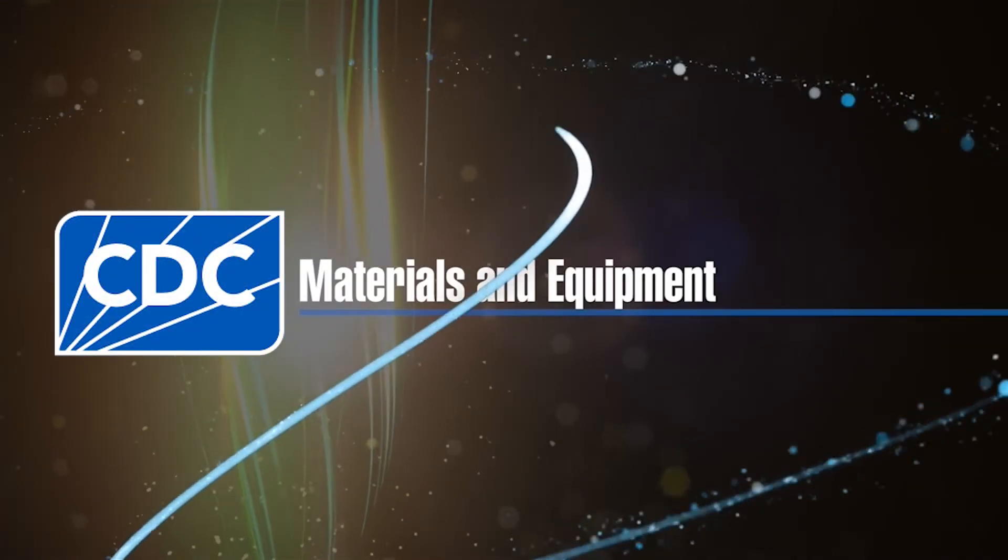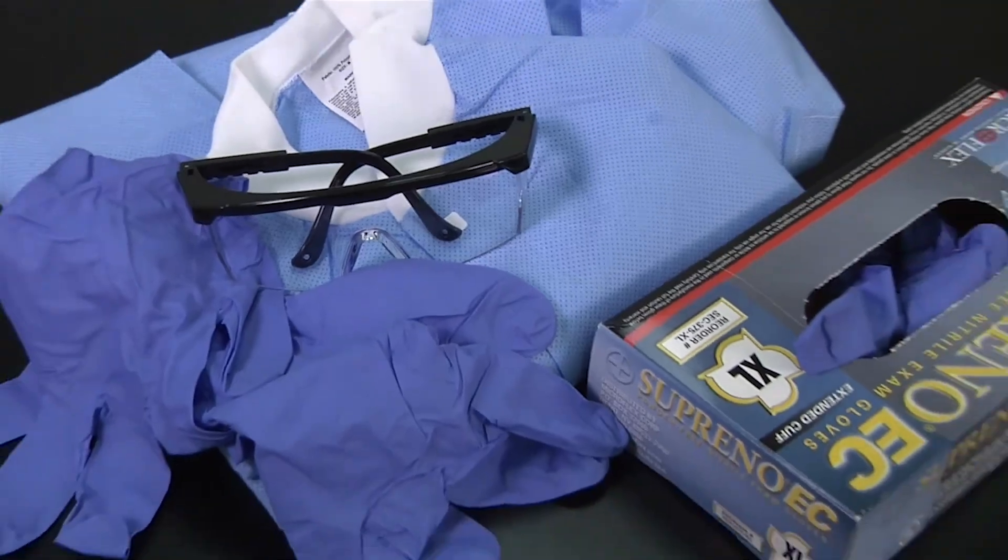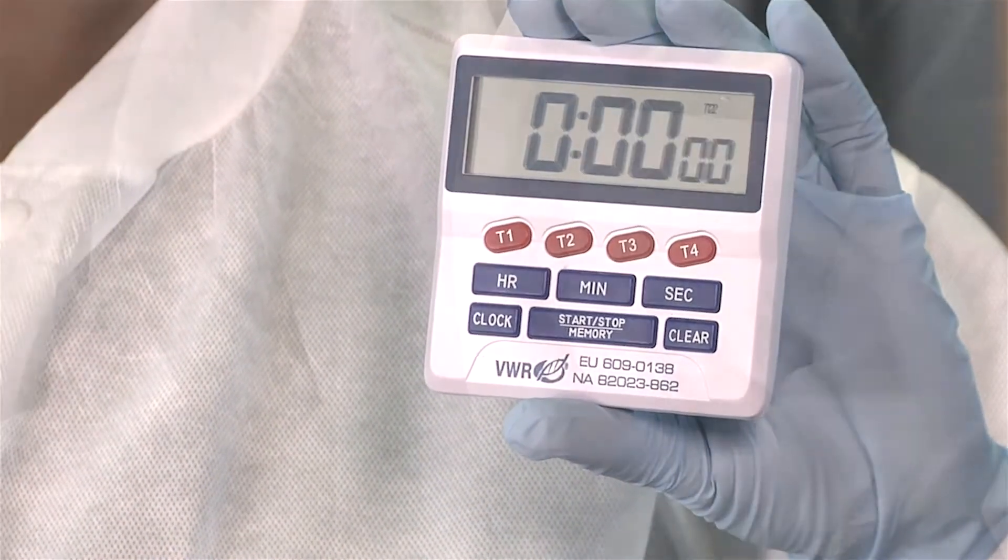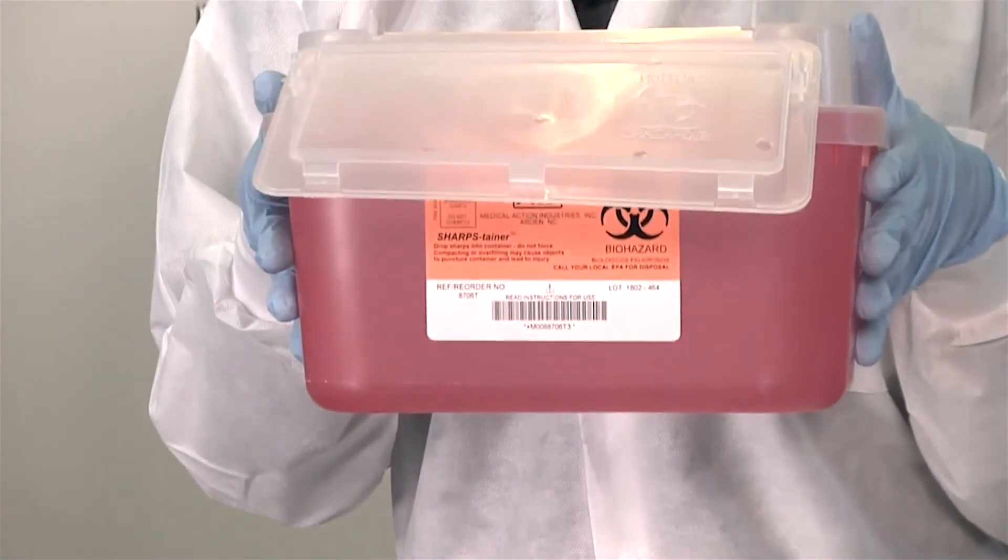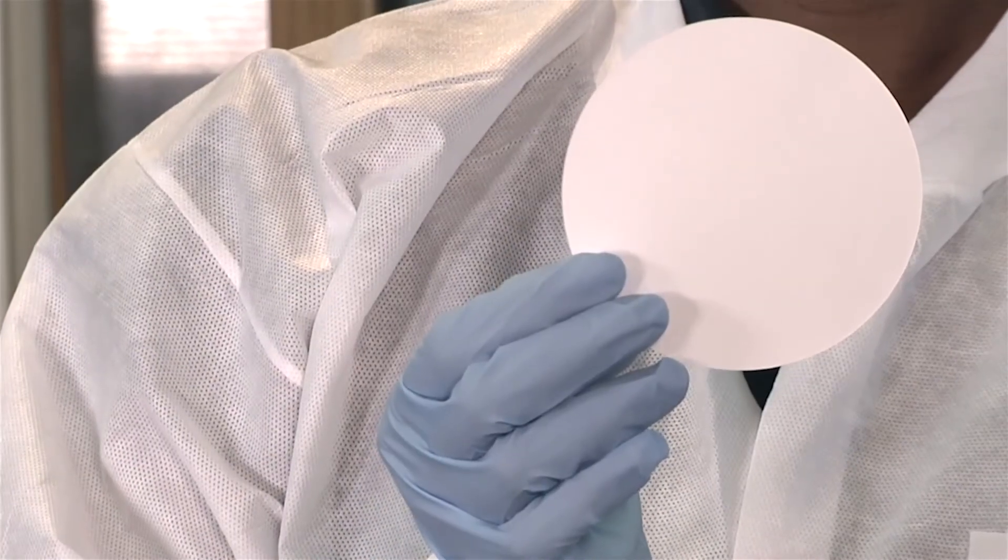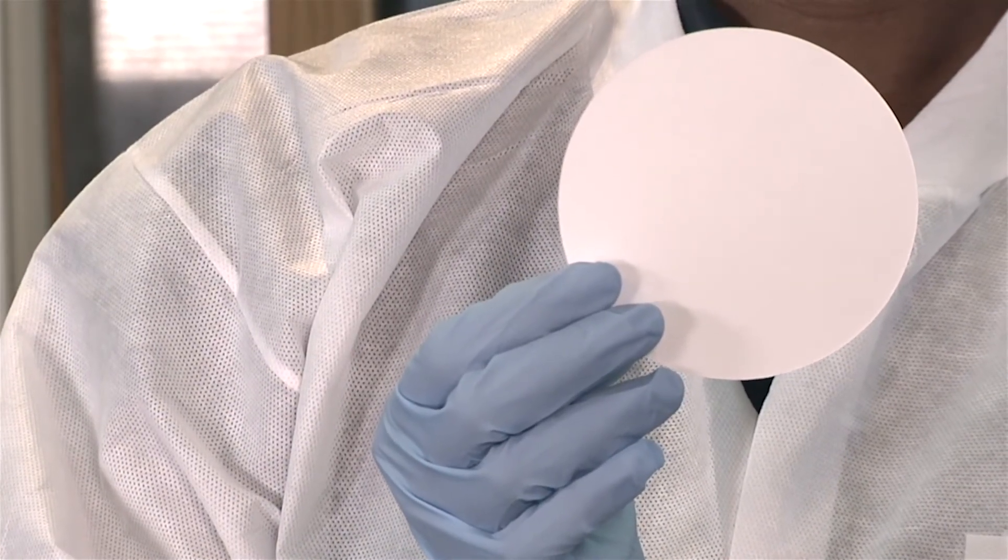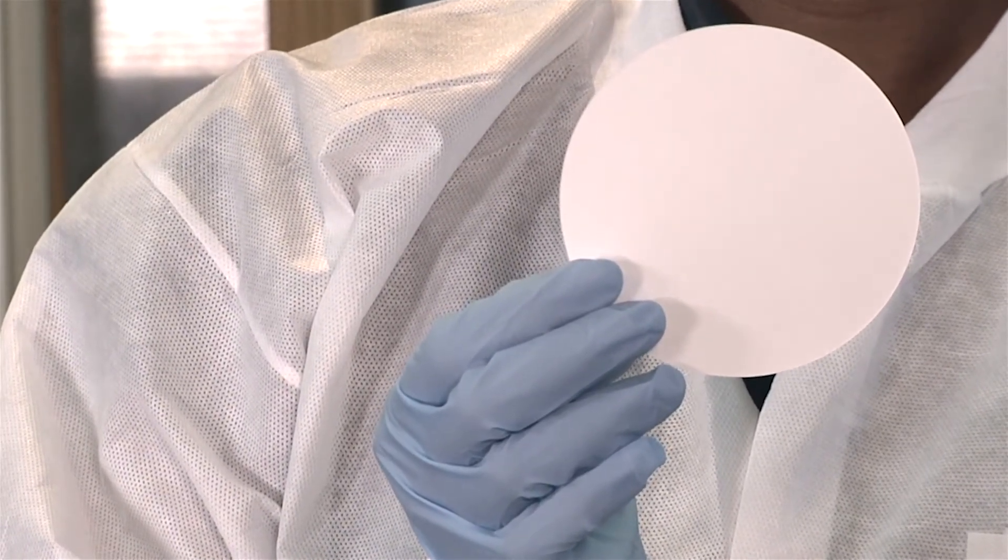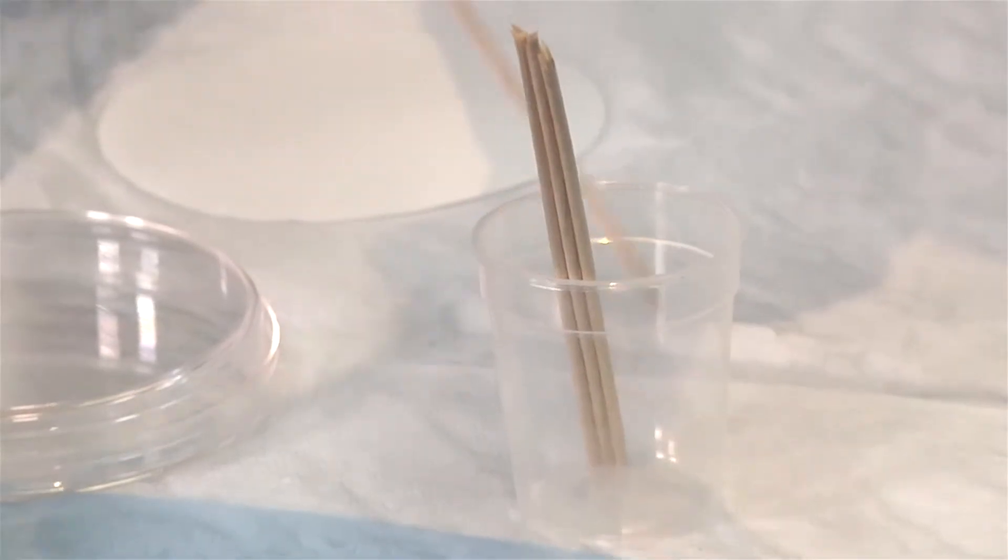For this procedure, you will need the following materials and equipment: personal protective equipment, a timer or clock, a sharps container, and a petri dish. You will also need filter paper. Do not use the filter paper once it begins to darken.